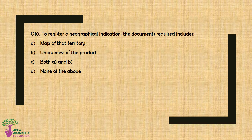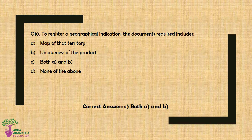Question No. 10: To register a geographical indication, the documents required include — Option A: Map of that territory, Option B: Uniqueness of the product, Option D: None of the above. The correct answer is Option C — Both a map of that territory and the uniqueness of the product.